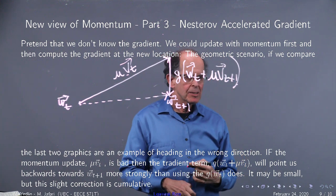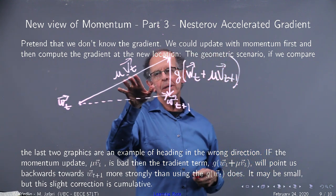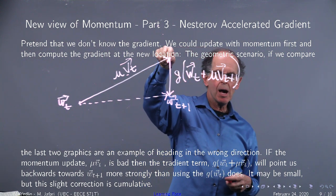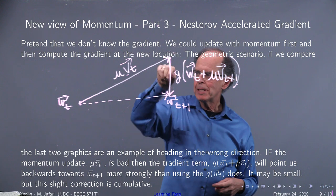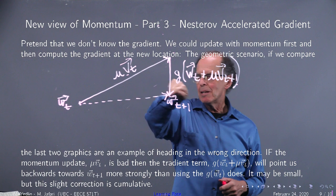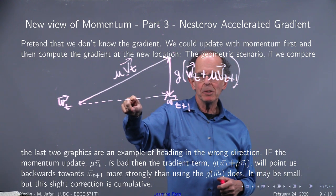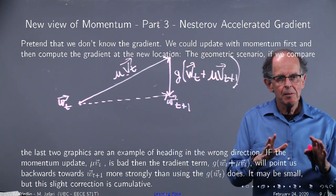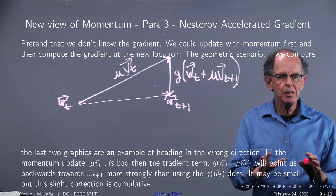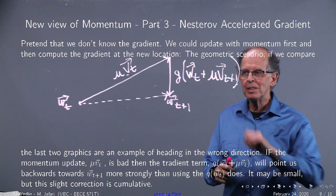If we're going in the wrong direction with the momentum term, this Nesterov gradient will tend — not a lot, but a little — to correct us and point back toward where we should be going, as you can see from the figure. It's just a slight push back. But when you're doing lots and lots of iterations, the effects are cumulative. So this is a really cool idea.